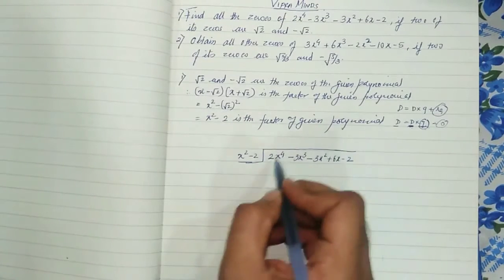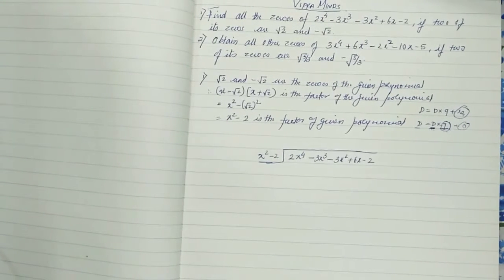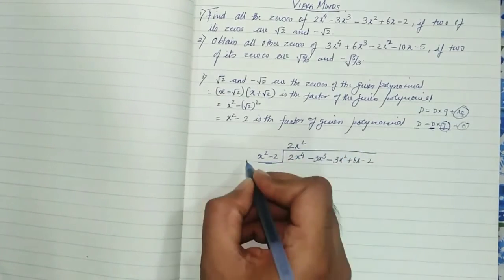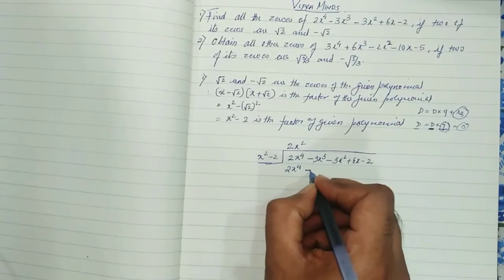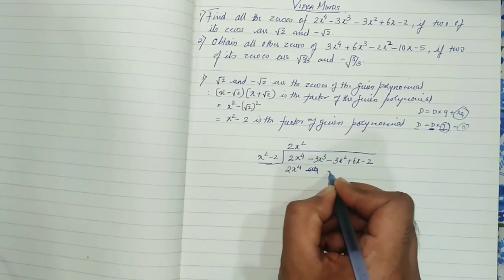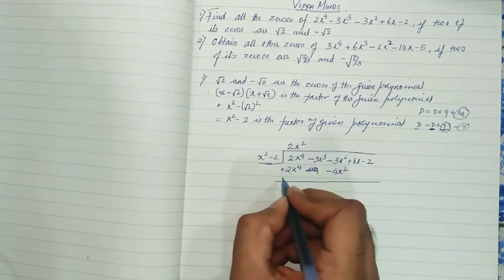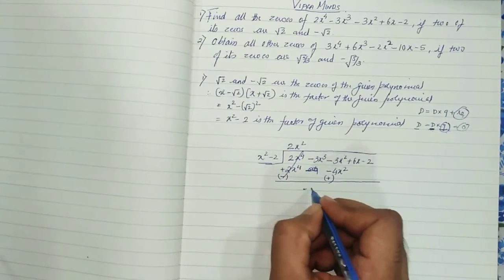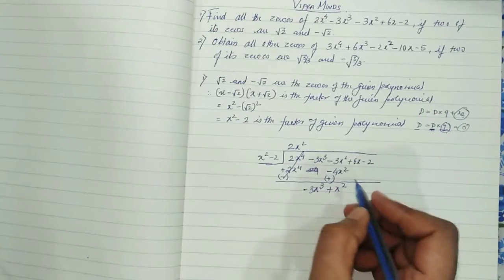Now dividing the given polynomial 2x⁴ - 3x³ - 3x² + 6x - 2 by x² - 2. First, to get 2x⁴, we multiply x² by 2x², giving 2x⁴. And 2x² × (-2) = -4x². When we subtract, the sign changes, so -3x² + 4x² gives +x². So after the first step we have -3x³ + x² + 6x - 2 remaining.